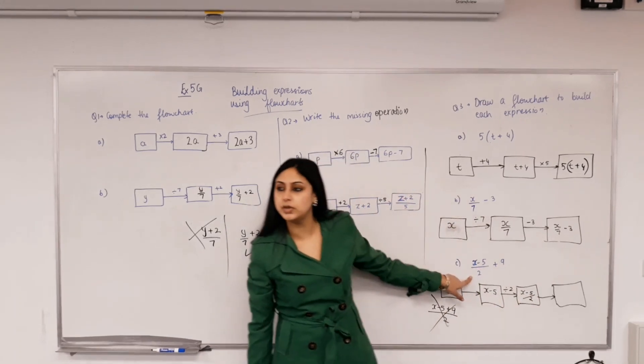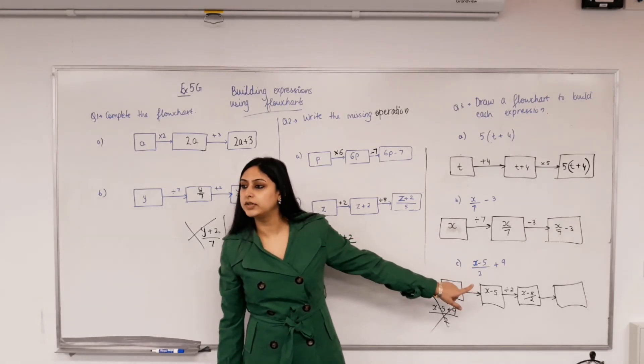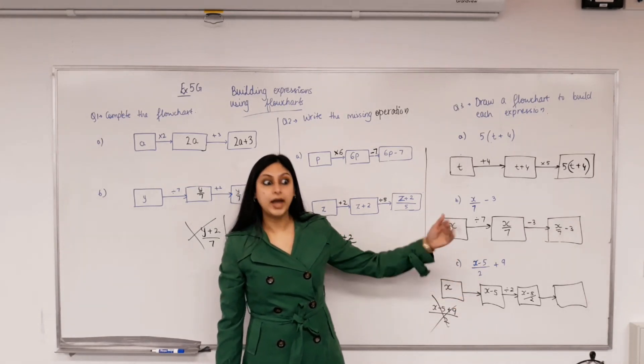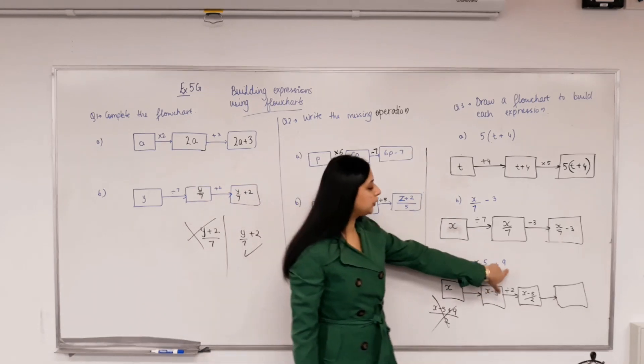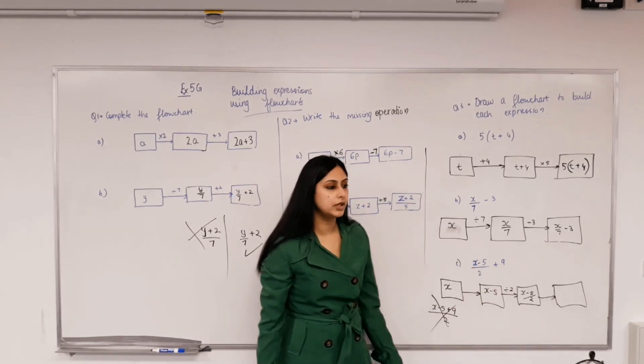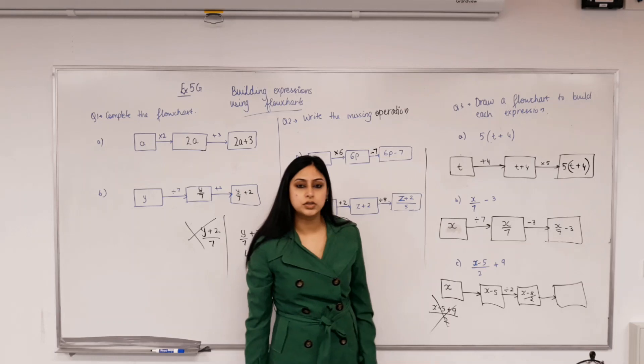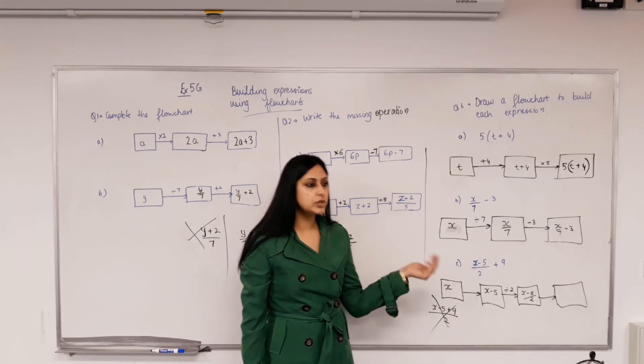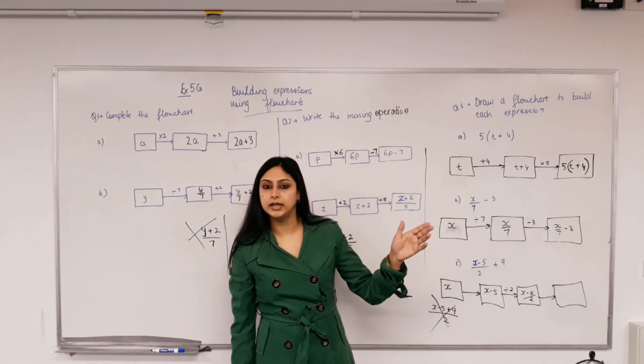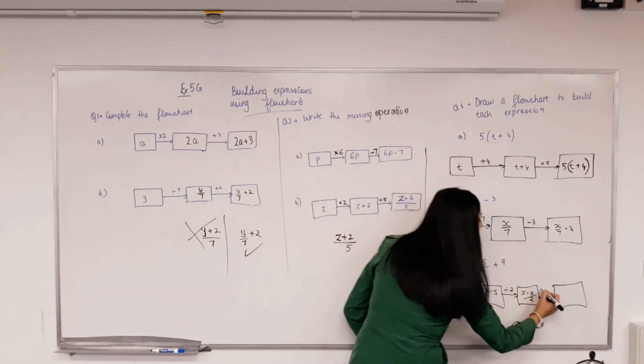Yeah, because see, 9 is not, 9 has not been divided by 2. Can you see 2 is not under 9? So that means 9 came after, because if you add 9 and then divide by 2, then 2 would be over 9 as well. So that's not the case, so clearly 2 has nothing to do with 9, so 2 came first. So we divided by 2 first and then what's left? Adding 9. Well done.